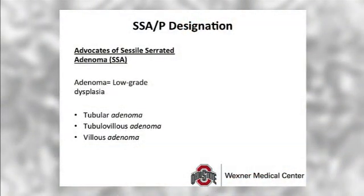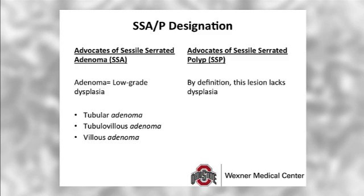Those who prefer the term sessile serrated adenoma or SSA point to the convention that adenoma implies at least low-grade dysplasia in the vast majority of GI tract entities. For example, tubular adenoma, tubular villous adenoma, and villous adenoma all are synonymous with low-grade dysplasia. These experts prefer the term sessile serrated adenoma because the adenoma terminology is widely recognized as having malignant potential, and thus may help ensure proper clinical management. Other experts oppose the term sessile serrated adenoma because this lesion lacks dysplasia by definition. These experts prefer the term sessile serrated polyp or SSP, thereby avoiding the problematic term adenoma and the resulting inference of low-grade dysplasia.